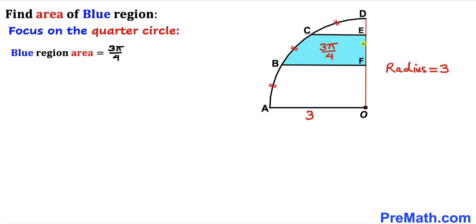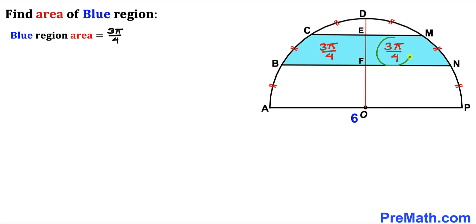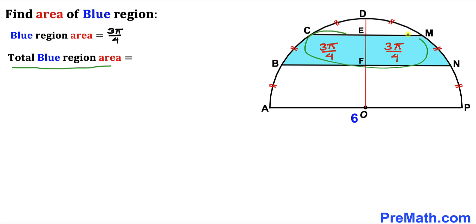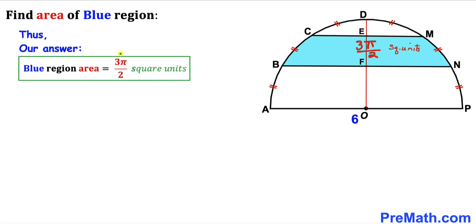This gives us 3π/4 square units. So the area of the blue shaded region for this quarter circle is 3π/4 square units. By symmetry, the other side is also 3π/4. Therefore the total blue shaded region area for the whole semicircle is 2 × (3π/4), which simplifies to 3π/2 square units.